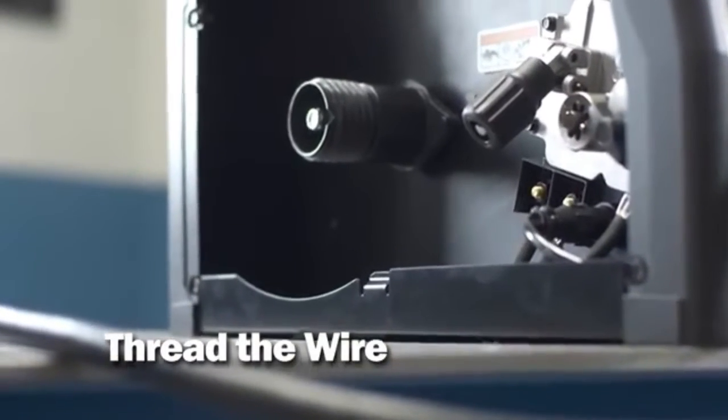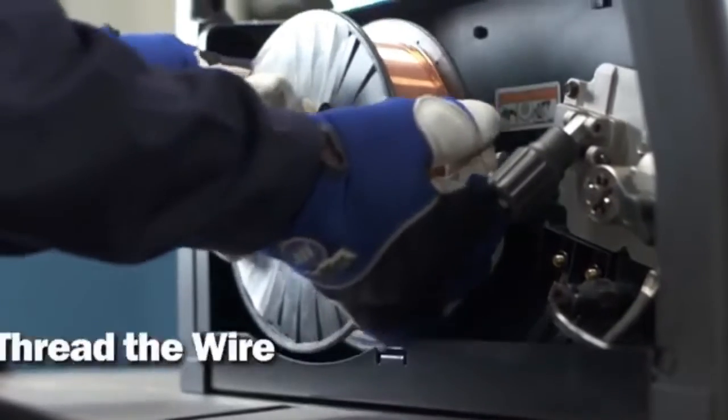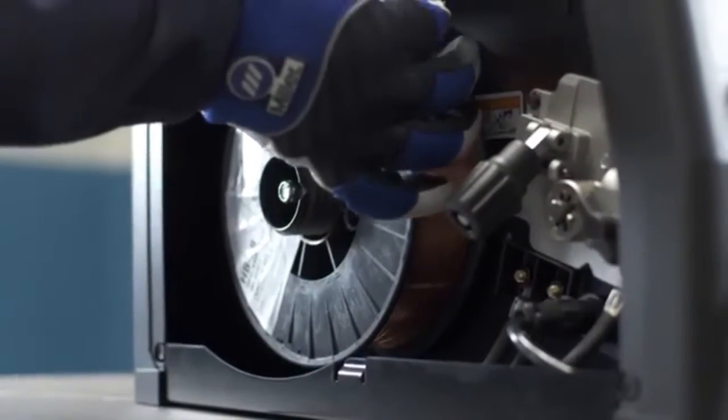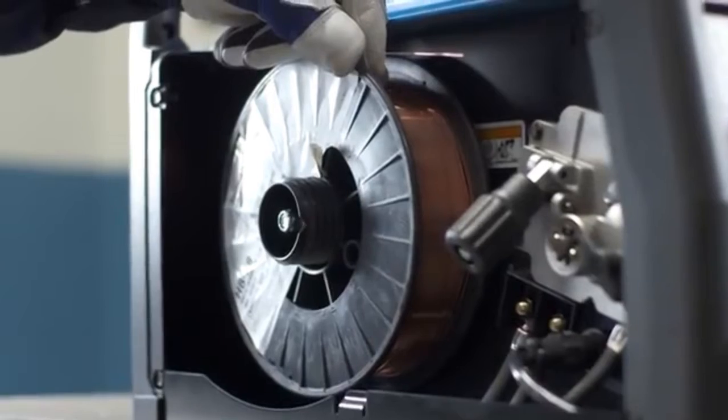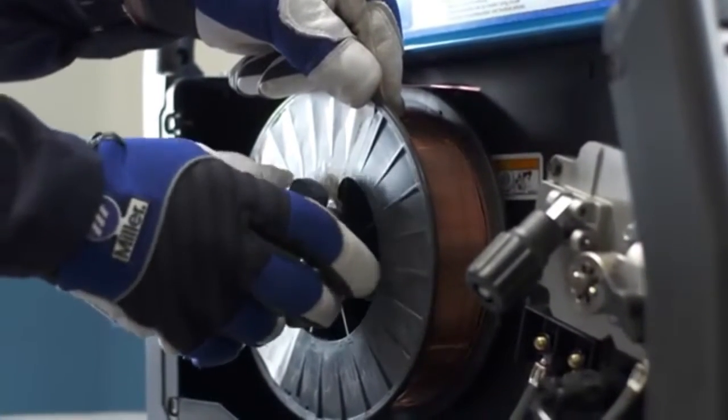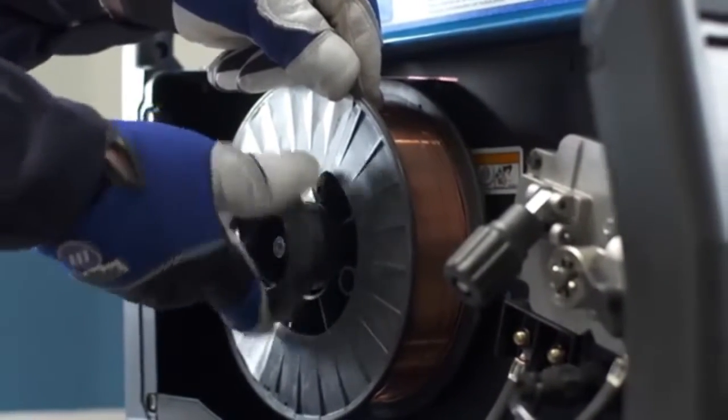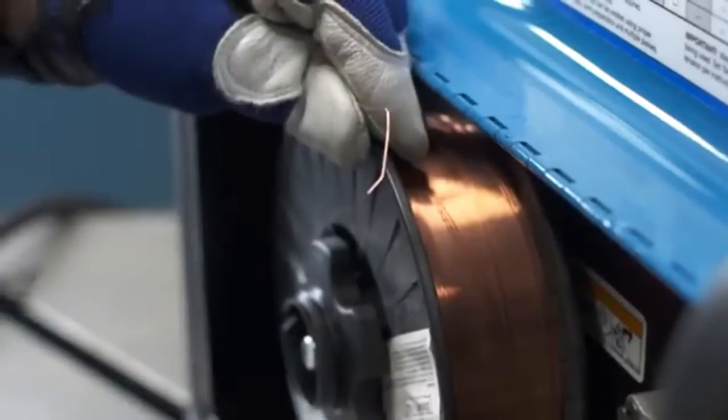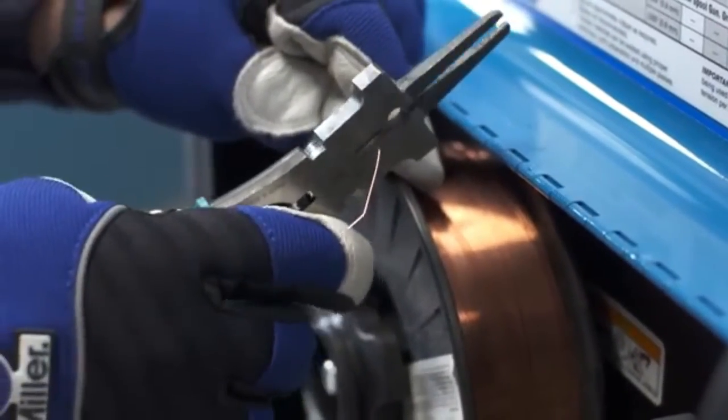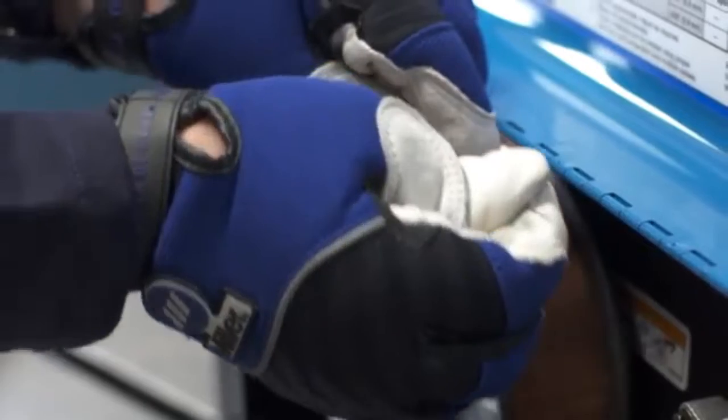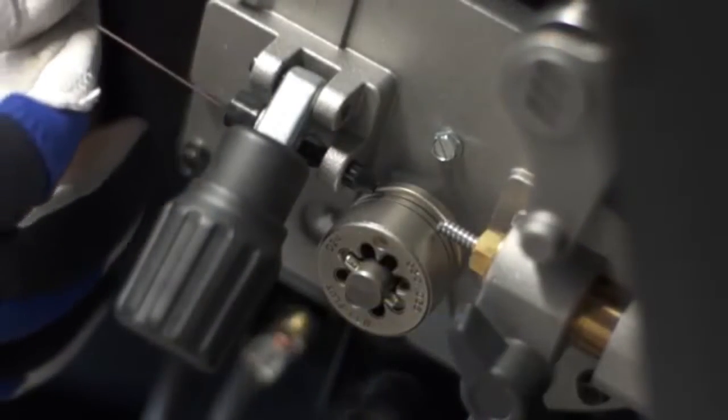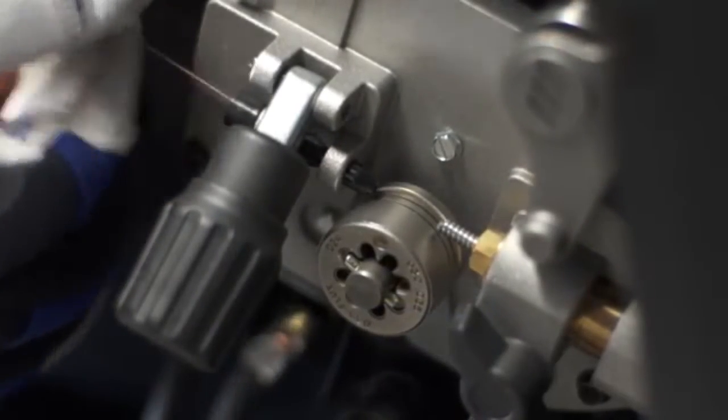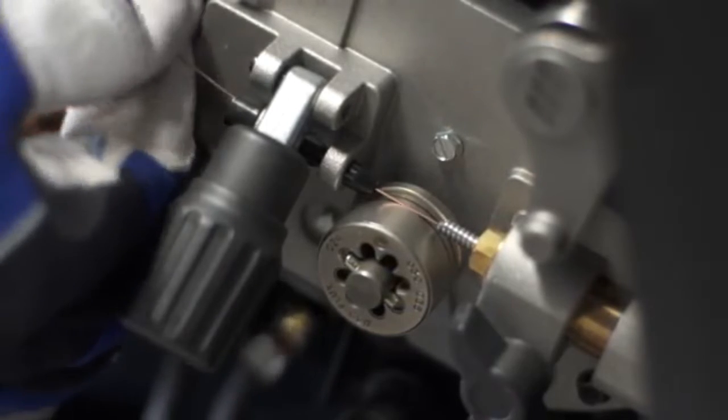To install wire on the Millermatic 141, 190 or 211, place the spool on the shaft, making sure that the pin on the machine fits into the hole on the spool. The wire should pull from the top of the spool in these machines. Install the locking nut to hold the spool in place. Unwind a few inches of wire and snip so you have a straight piece of wire. Thread the end of the wire through the inlet guide, across the drive roll and into the MIG gun liner. Close the pressure lever and raise the tension knob until it seats into position.